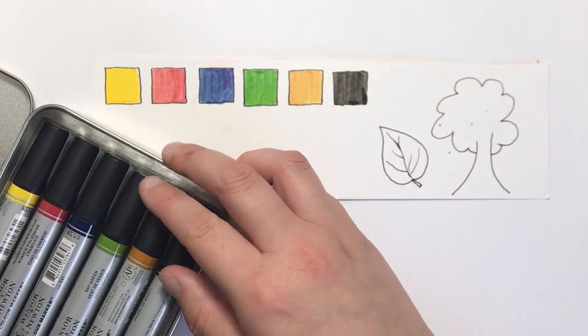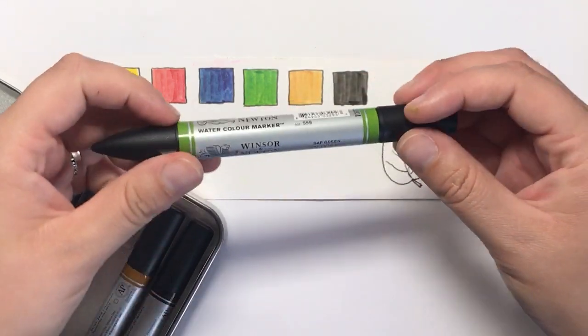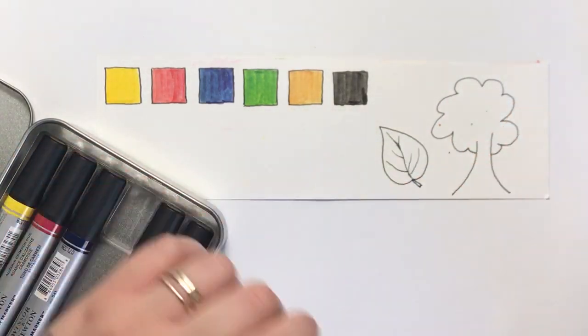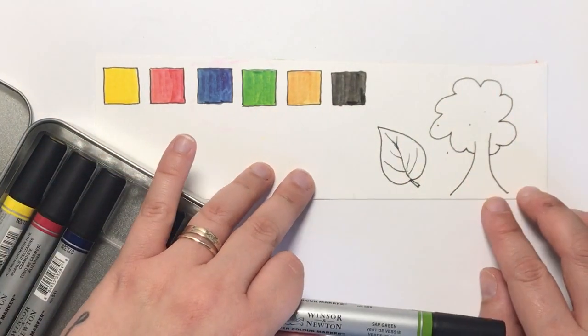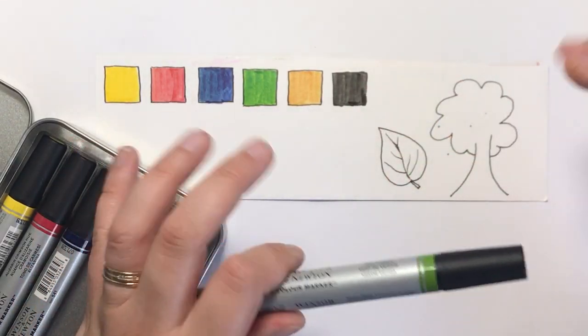Now the bullet nib is ideal for the tricky details, but this brush nib has got to be my favourite as it's just so dense and juicy. So now I'm going to show you what happens when we add water to an image, and here I've drawn a very crude tree for the purpose of this demonstration.